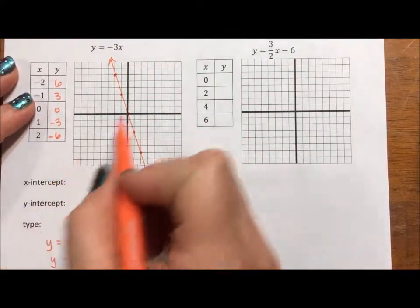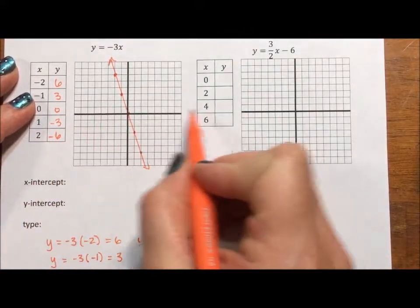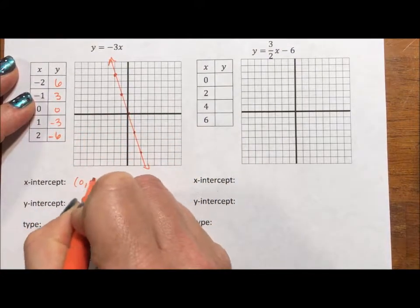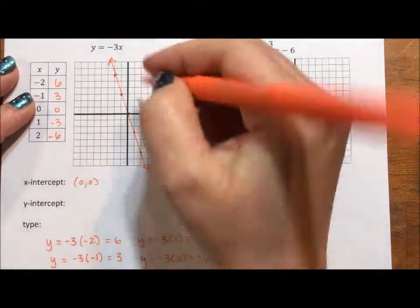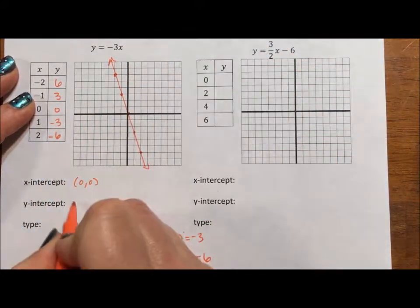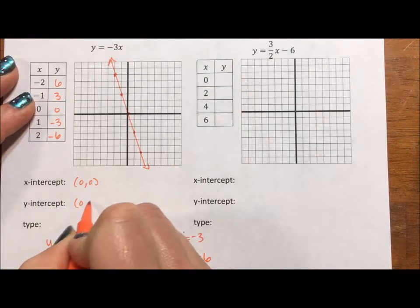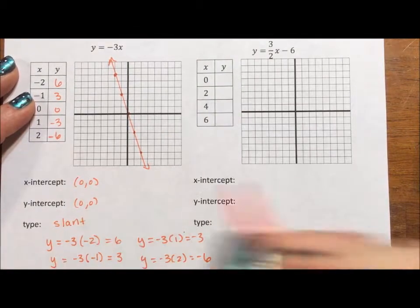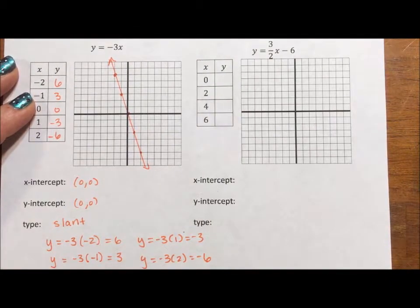The x-intercept where it crosses the x-axis is (0, 0). The y-intercept where it crosses the y-axis is also (0, 0). And this is a slant line versus horizontal or vertical.